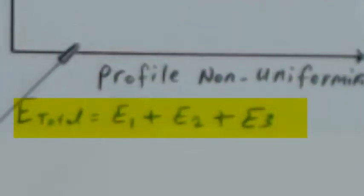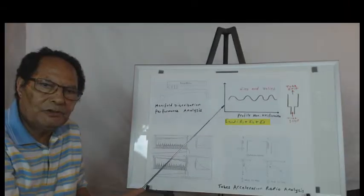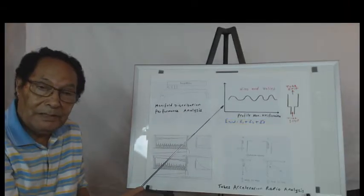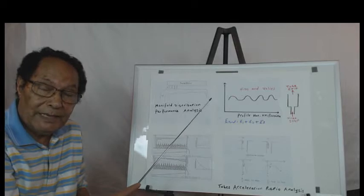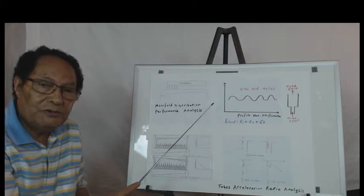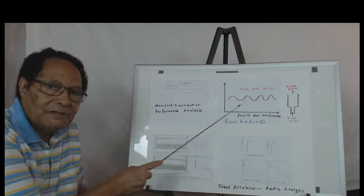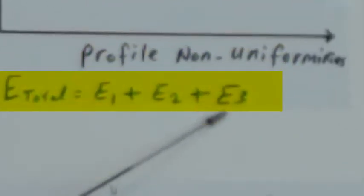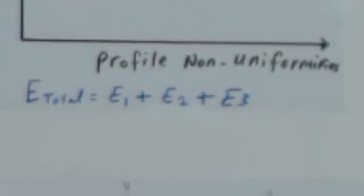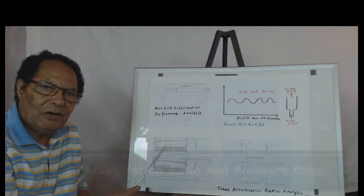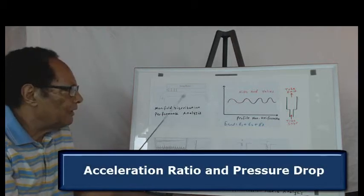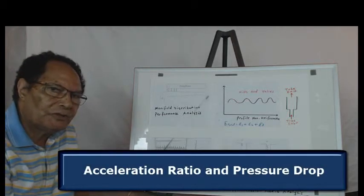E2 is the pressure drop through these tubes. If the tubes have fiber buildup inside or at the inlet, you end up with different pressure drops, different non-uniformities. E3 is very important. I don't want to go into too much calculation detail, but it's based on the acceleration ratio and pressure drop through the tubes.